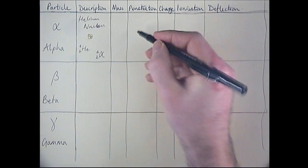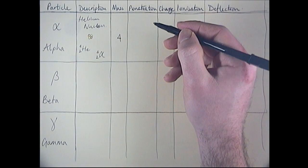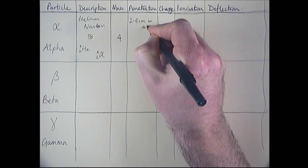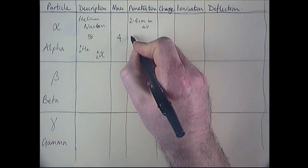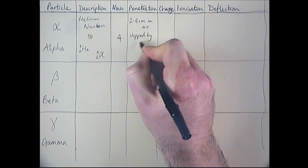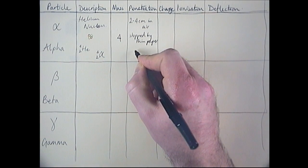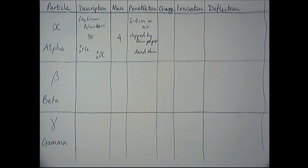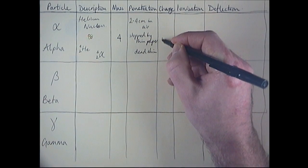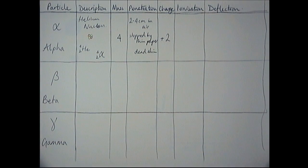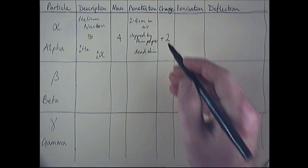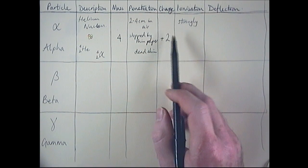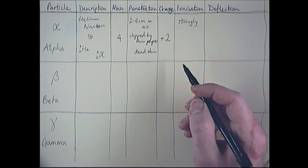Its mass, well, look from here, its mass is four. Now because of that high mass, it's actually not very penetrating. So what we say is its range is only about two to four centimeters in air. We say that it will be stopped by thin paper, or we say it will be stopped by dead skin. So largely, if it's outside the body, it won't even get in through the dead skin. Its charge, well, it's got two protons, so its charge is a positive charge, and it's two. Its ionizing ability, then, is quite strongly ionizing, because it's got a plus two charge. So what it will do is it will actually take electrons from atoms with that positive charge.